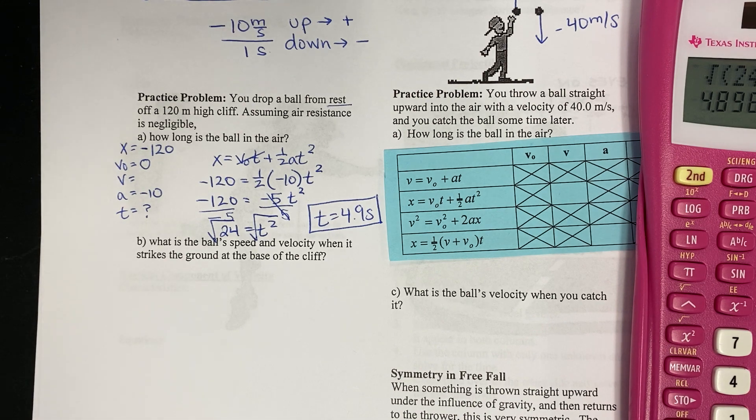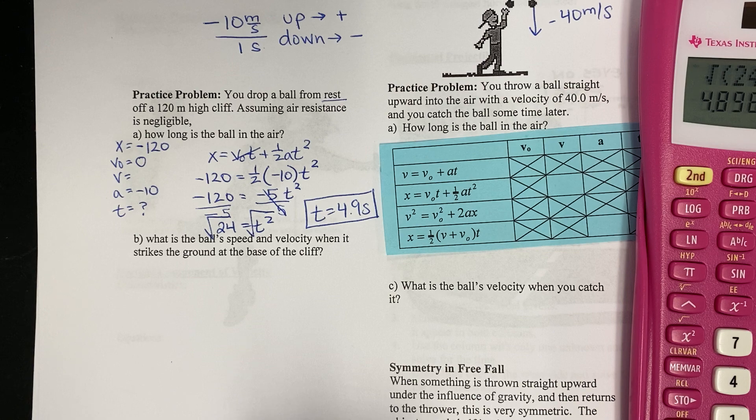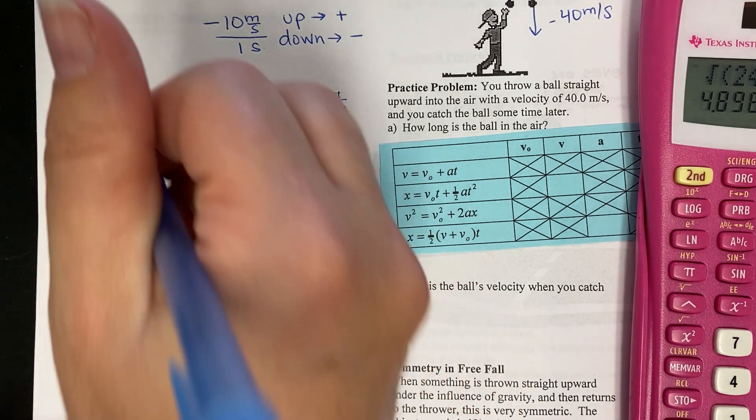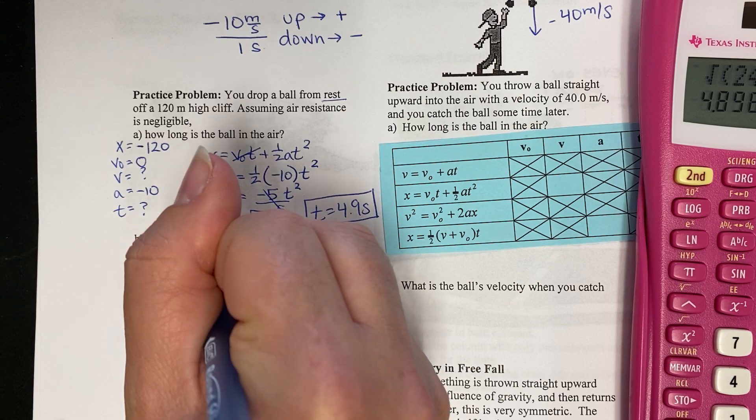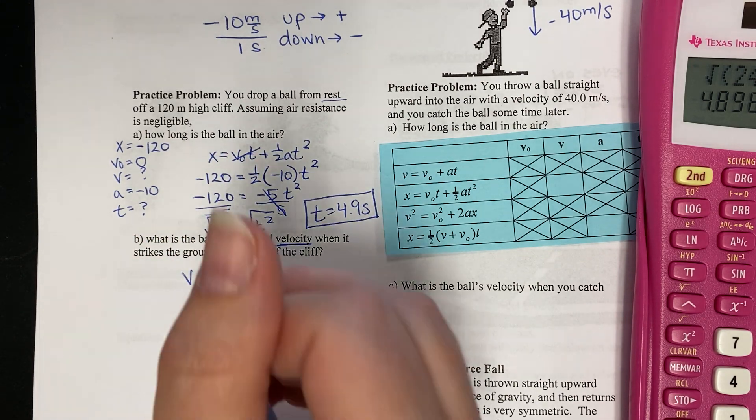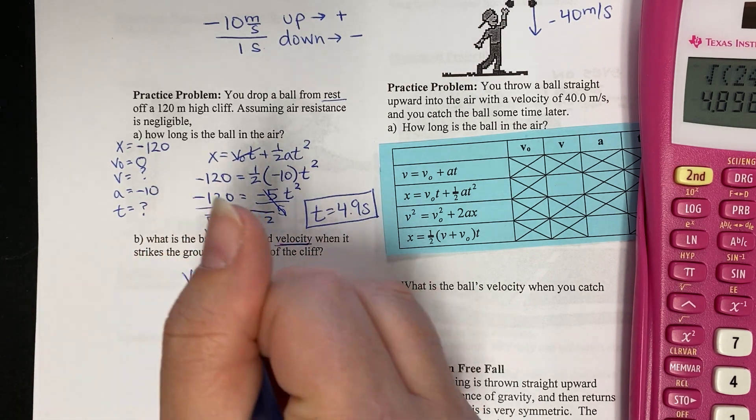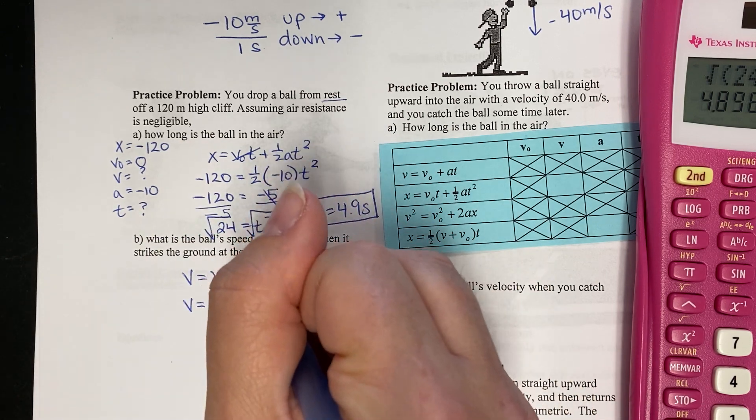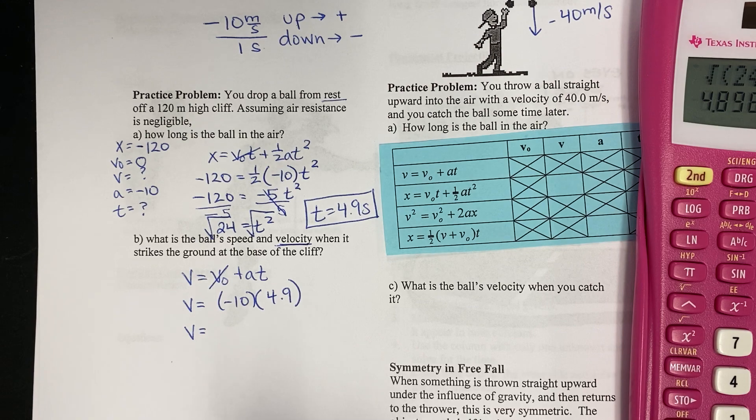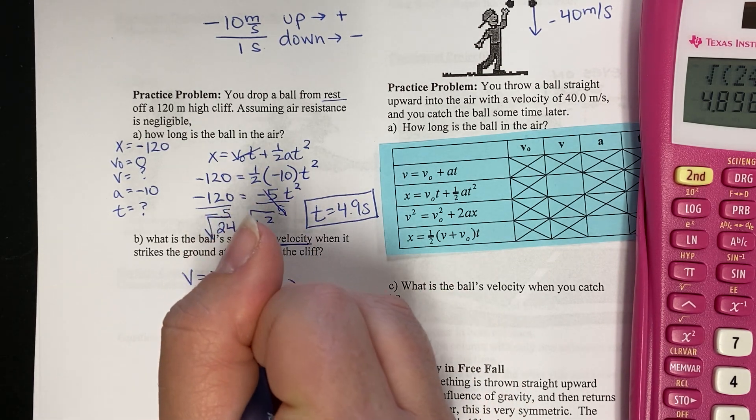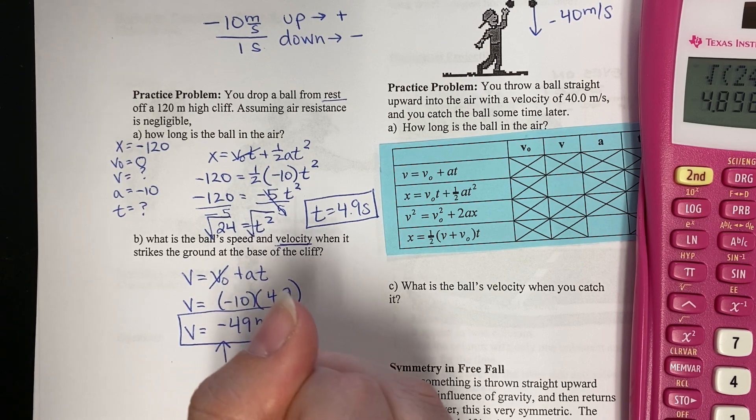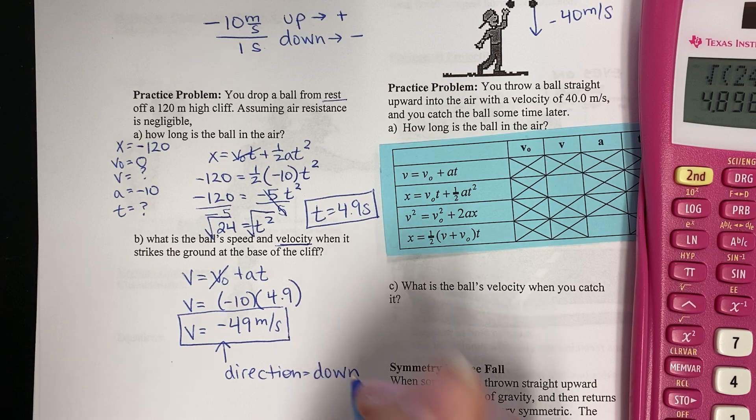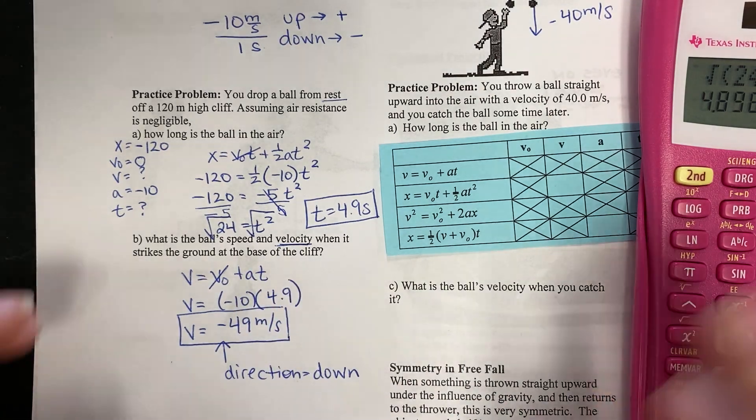Cool. All right. And then the second part says, what is the ball's speed and velocity when it strikes the ground? Now velocity wants a direction. So we just have to make sure we're telling this, is it moving in which direction? So to find the velocity, we now have all of the pieces. So I always like to choose the easiest of the equations. V equals V naught plus A T. Again, the initial velocity is zero. So I get negative 10 times 4.9. Well, this I can even do in my head. So this gives me negative 49 meters per second. Now, since this tells me negative, that tells me my direction is down. So that gives me both my speed and the direction for the velocity.